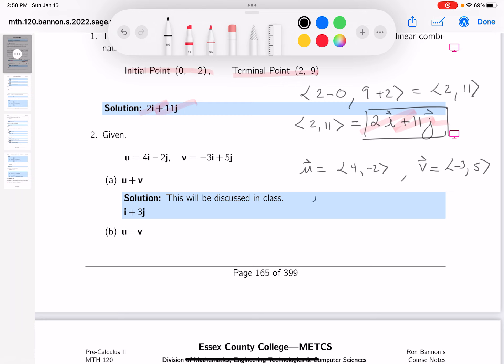They want us to take vector u and add it to vector v. It's pretty easy to do, just add the coordinates together. So 4 plus -3 is 1, and -2 plus 5 is 3.